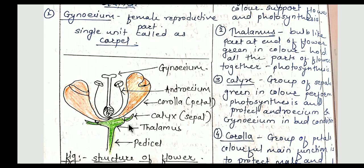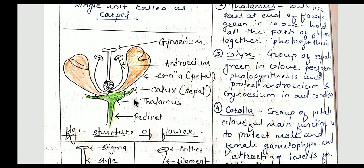Thalamus is a bulb-like part present at the end of the flower which is green in color and holds all the parts together. As it is green in color, it also performs a little photosynthesis. Calyx consists of small petal or leaf-like structures called sepals — all sepals together form the calyx, which is green in color. So it also performs photosynthesis, and the main function of calyx is to protect the androecium and gynoecium in the bud condition when they are undeveloped or developing.